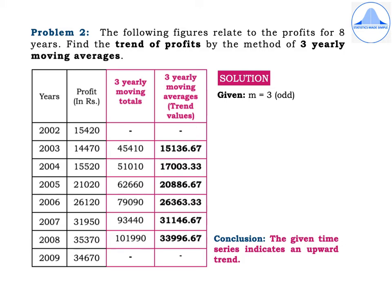Now find the three-yearly moving averages by dividing each total by 3. The first trend value is missing. Then: 45,410 ÷ 3 = 15,136.67, followed by 17,003.33; 20,886.67; 26,363.33; 31,146.67; and 33,996.67. Observe all the trend values in the last column — they are all increasing. So the conclusion is: the given time series indicates an upward trend.